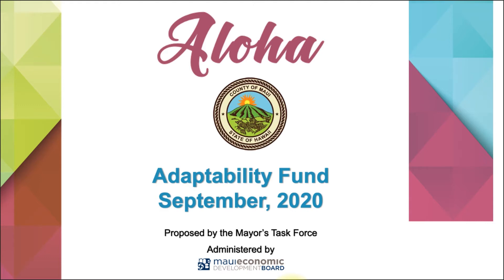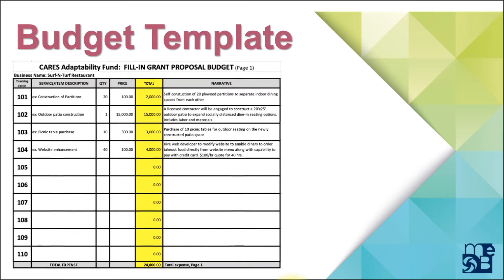Let's take a minute to discuss the budget template that you'll need to fill out and submit with your proposal. We'll provide the link where you can find it at the end of the webinar. This is one of six documents that you'll need to provide. This is a high-level look at the template. There are ten rows on the template and there are two pages — this is just one of the pages.